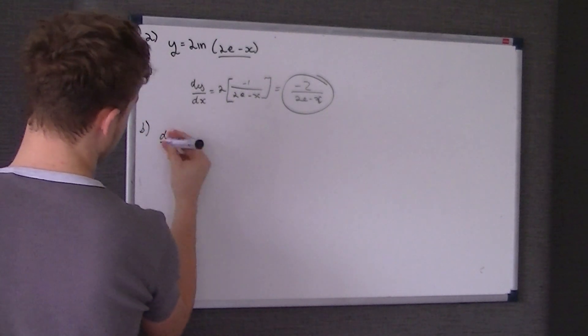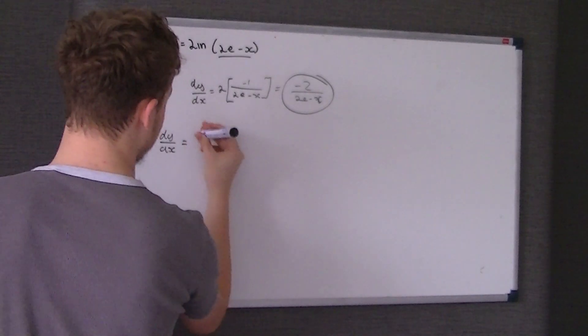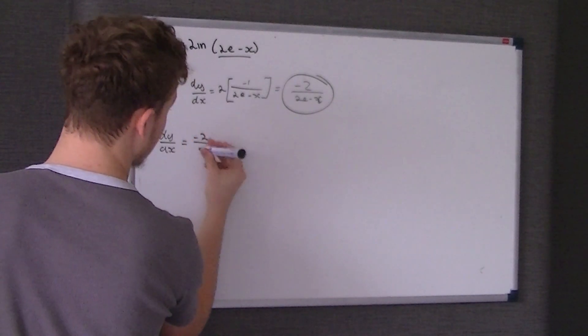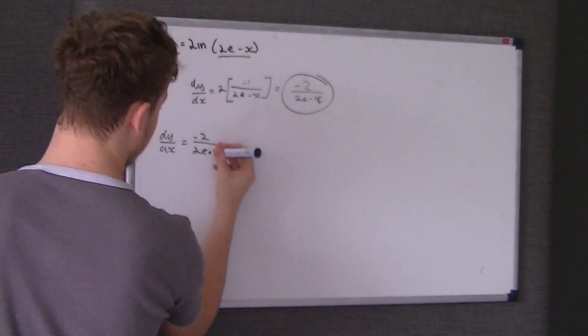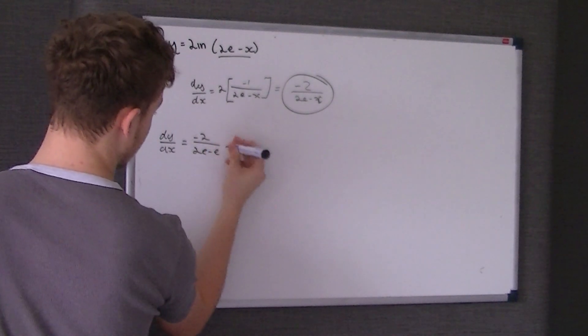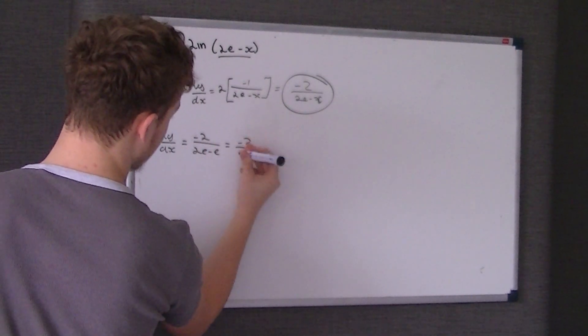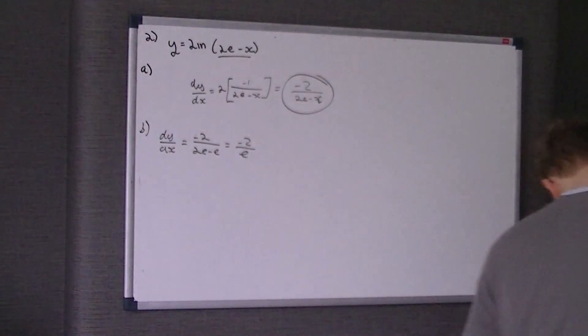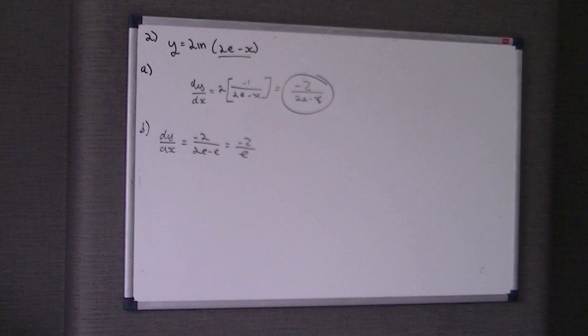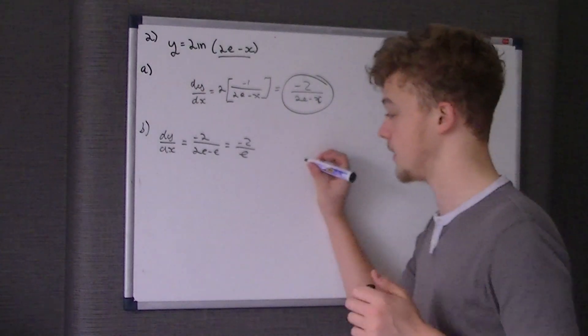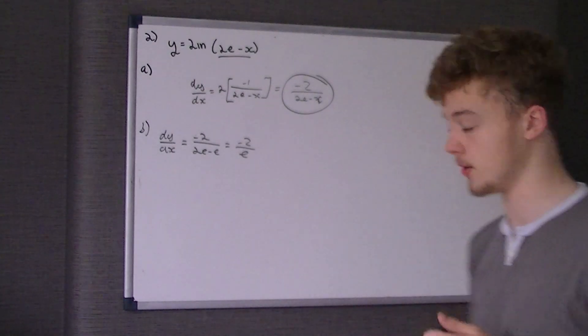So we'll just sub in e where we can see x, and we're going to do the negative reciprocal of that. So rewrite out the equation again, dy/dx equals negative 2 over 2e take e, so it's just negative 2 over e. That's your gradient.